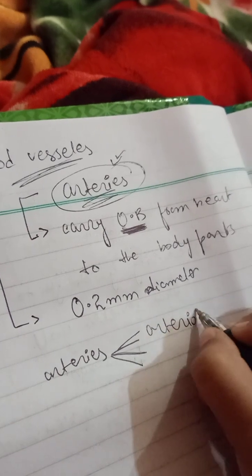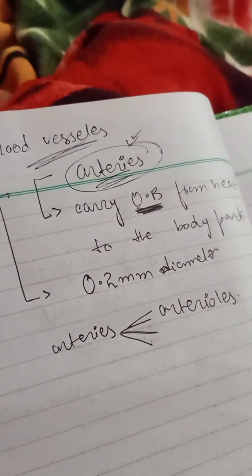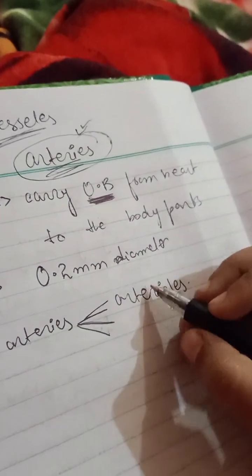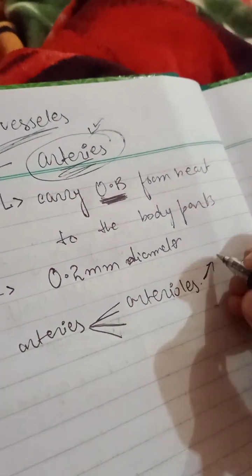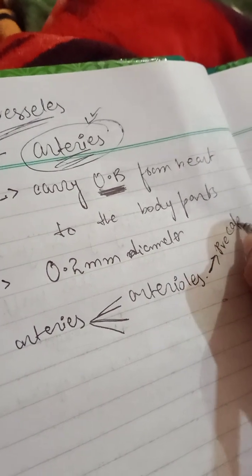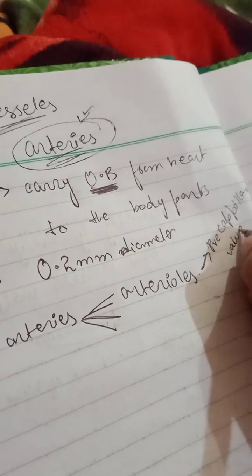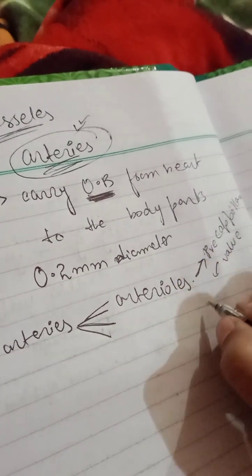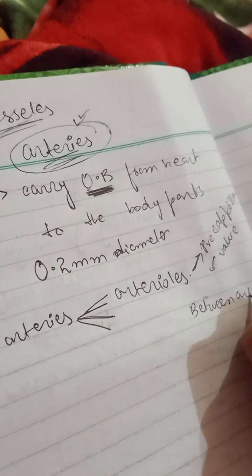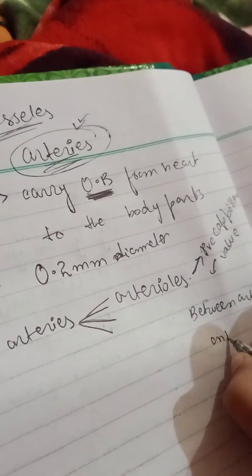Arteries are basically divided into the arterioles, and the arterioles are divided into the capillaries. We also have the pre-capillary valve, which is basically located between the artery and the capillaries.